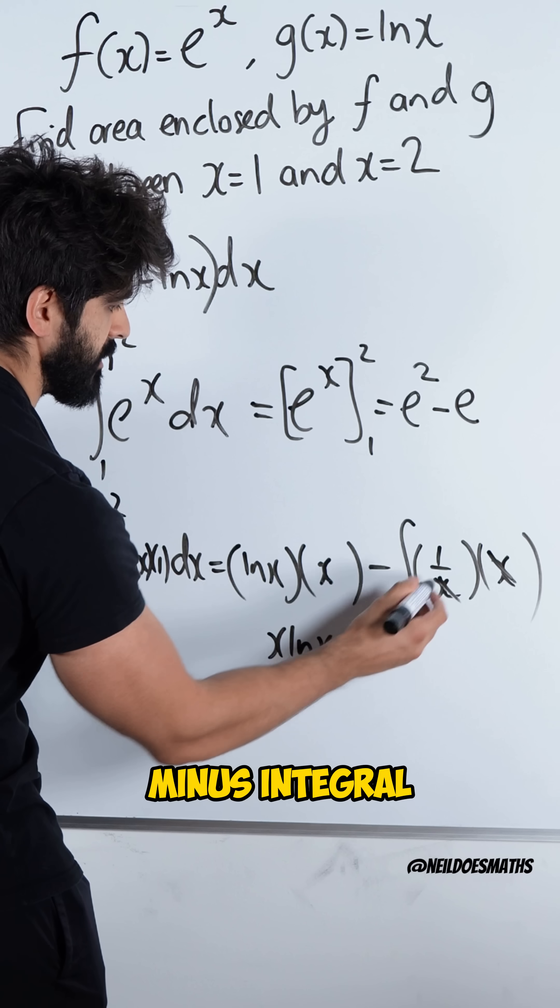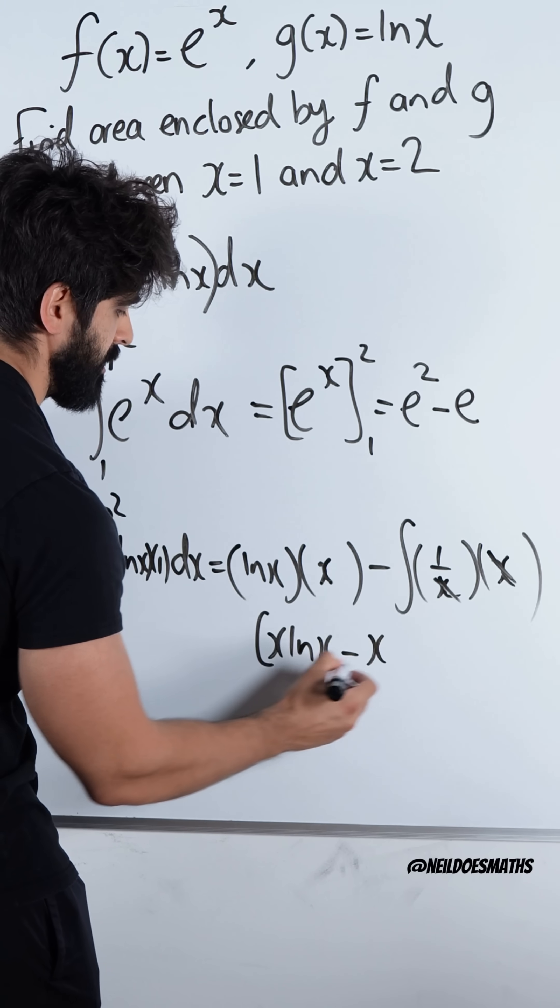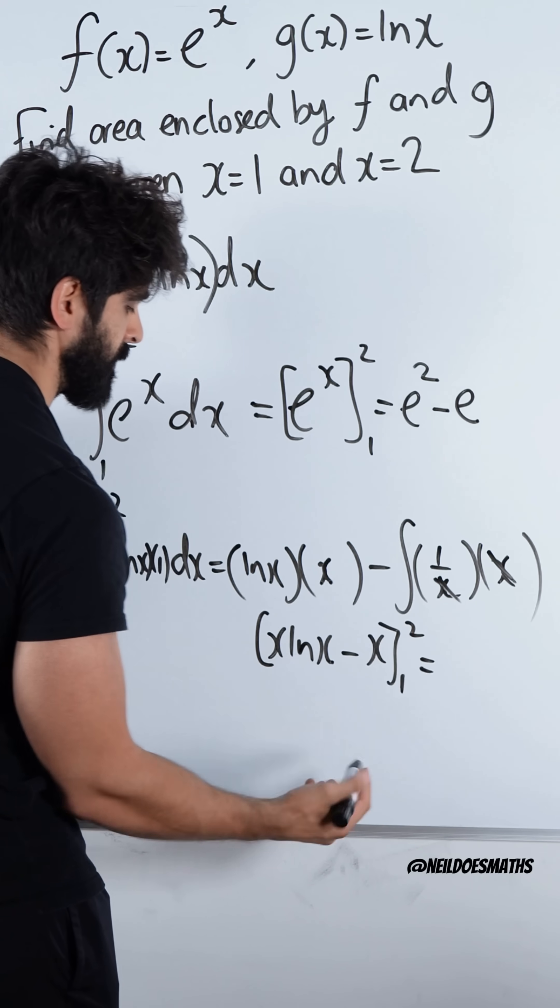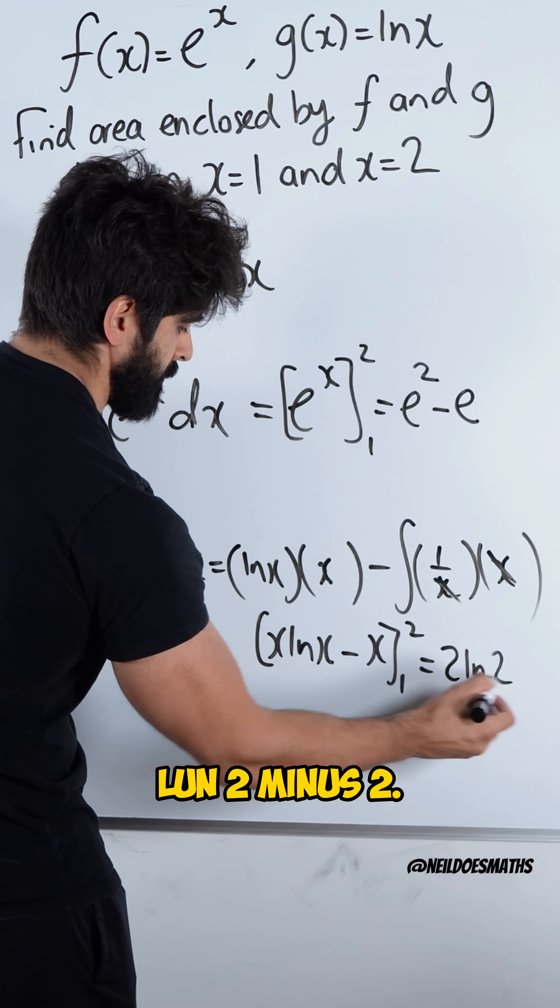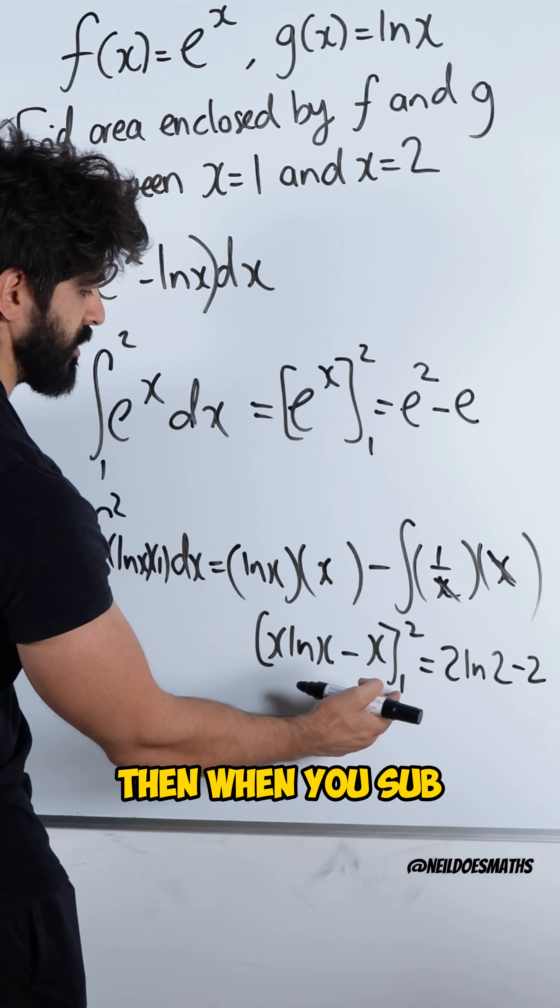So we get x ln x minus the integral of 1, which is x, between 1 and 2. Subbing in 2, 2 ln 2 minus 2.